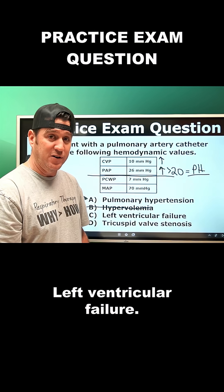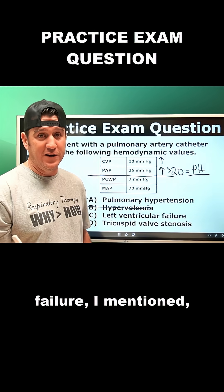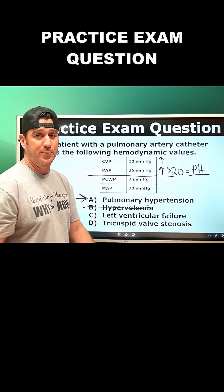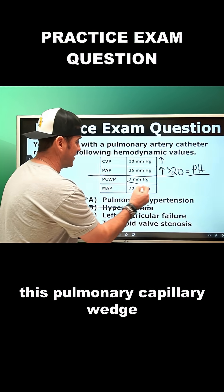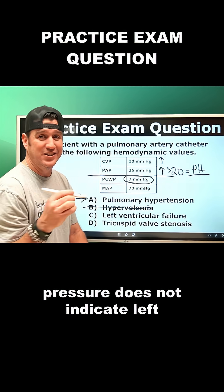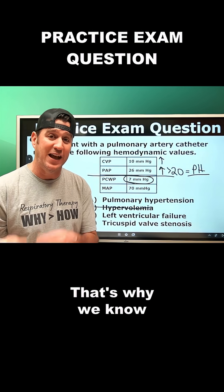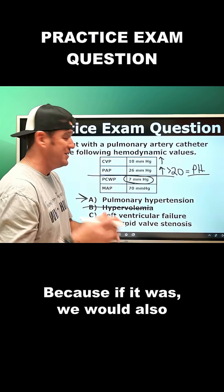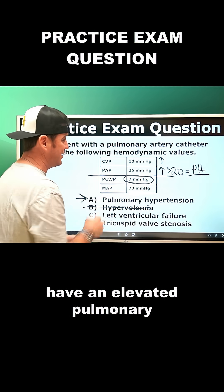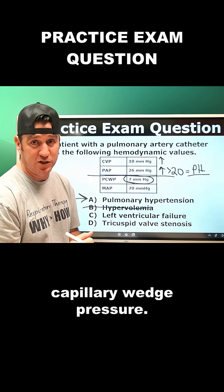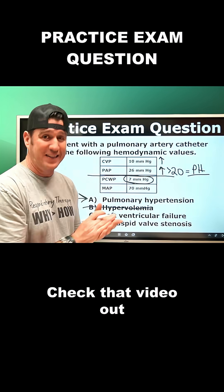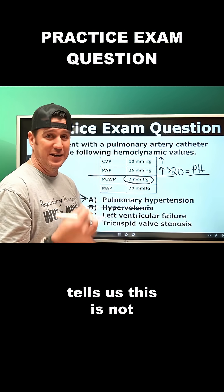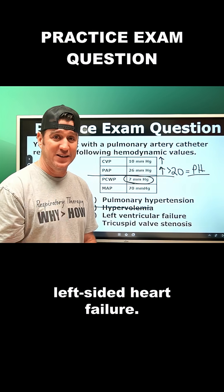Left ventricular failure — left ventricular failure could be the cause of an elevated pulmonary artery pressure. But the problem is that this pulmonary capillary wedge pressure does not indicate left ventricular failure. That's why we know where the problem is. It's not with the left side of the heart, because if it was, we would also have an elevated pulmonary capillary wedge pressure. We talked about that in a prior video — check that out — but being within normal range tells us this is not left-sided heart failure.